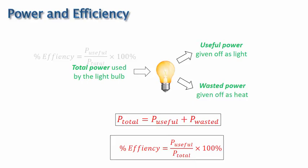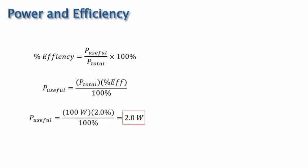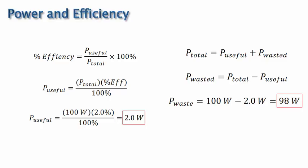Using the efficiency equation, we can solve for the useful power, and plugging in values, we find that the light bulb produces 2 watts of light. We can also use the equation relating the three categories of power to solve for the wasted power, and so we see that the light bulb emits 98 watts of heat.